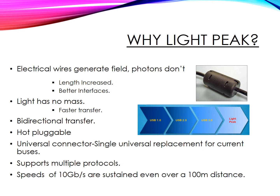Why Light Peak technology? As explained earlier, electrical wires generate electromagnetic fields but photons don't. And since light has no mass, we can transfer data over long distances at higher speeds. Light Peak also provides bidirectional transfer and it is hot pluggable, meaning it can be plugged or removed without affecting the operation of the system, and thus no restart is required.